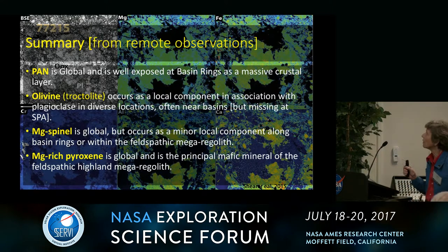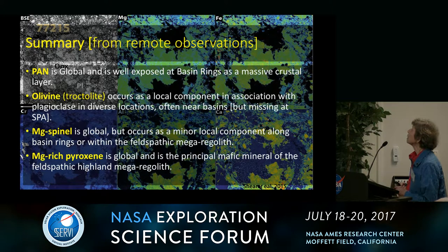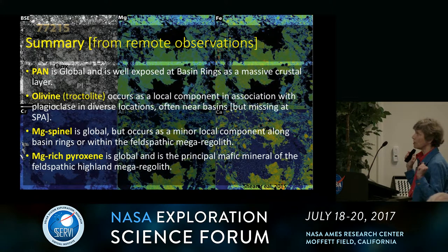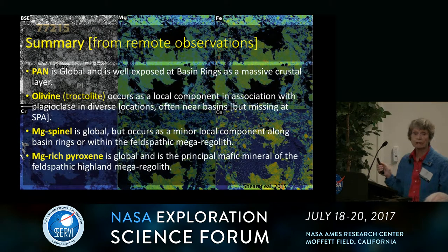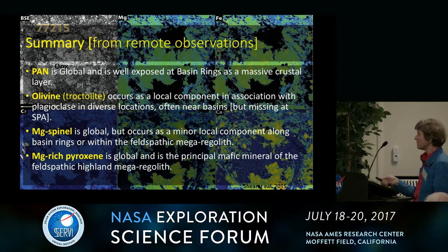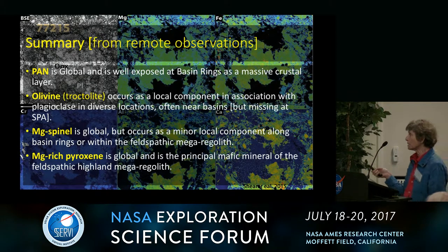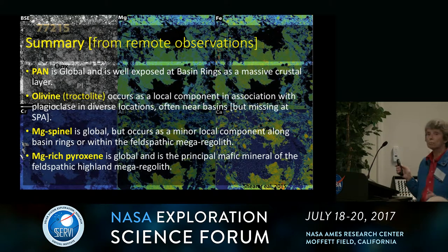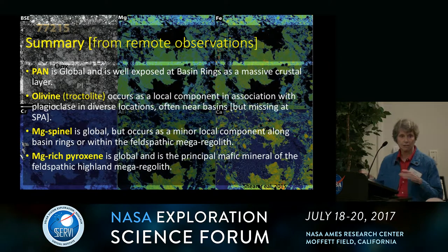Summary: The global anorthosite — PAN — is exposed as a massive layer. Olivine troctolite occurs as a local component in association with plagioclase in diverse areas, often at basin rings, but is missing in SPA. Magnesium spinel is global but occurs as a minor component. Magnesium-rich pyroxene is global and is the principal mafic component in the feldspathic highlands megaregolith.